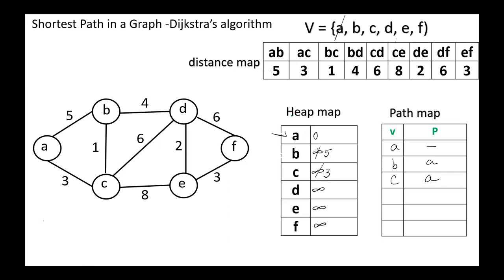Among the remaining vertices, the vertex with the smallest cost is vertex C. We set C as the current node. C is connected to A (visited) and to B with distance one: three plus one equals four, less than five, so we update this value to four. We update the parent of B; now the parent is C. C is connected to D with distance six: three plus six equals nine, so we set this value to nine and fix the parent of D as C. C is connected to E with distance eight: three plus eight equals 11, less than infinity, so we update this value to 11 and set the parent of E as C. We are done with C; we remove it and mark it as visited.